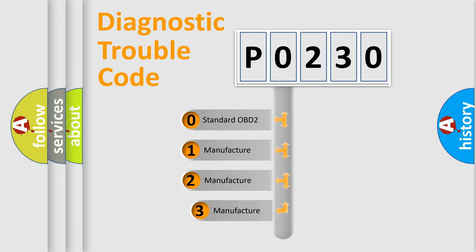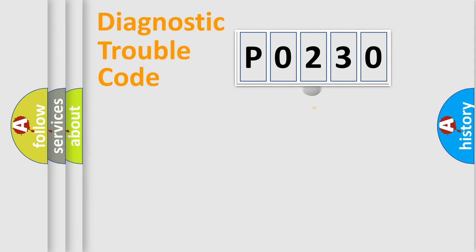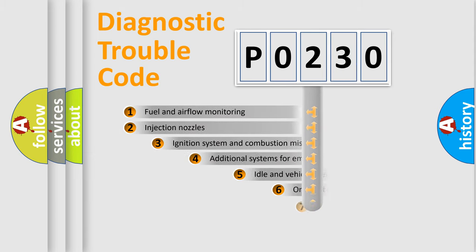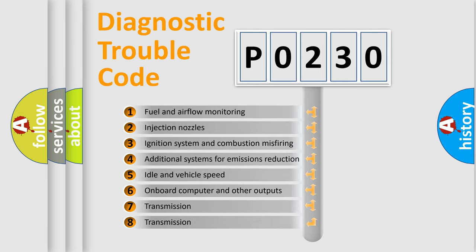If the second character is expressed as zero, it is a standardized error. In the case of numbers 1, 2, or 3, it is a more specific expression of the car-specific error. The third character specifies a subset of errors.